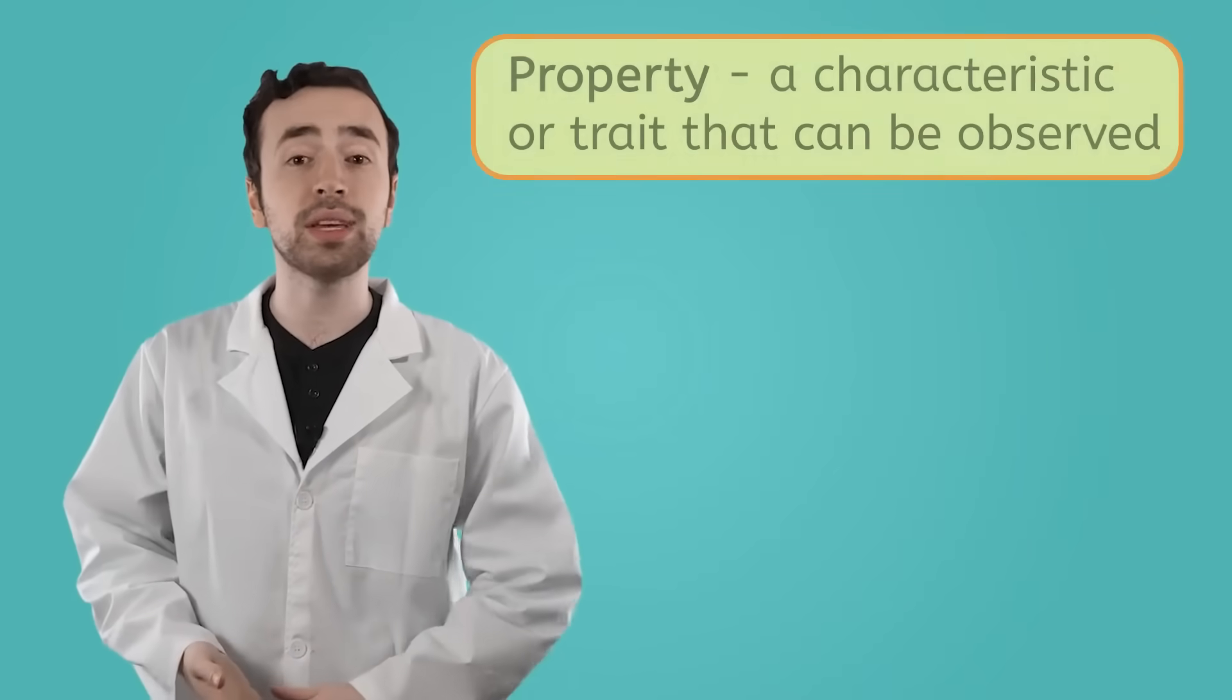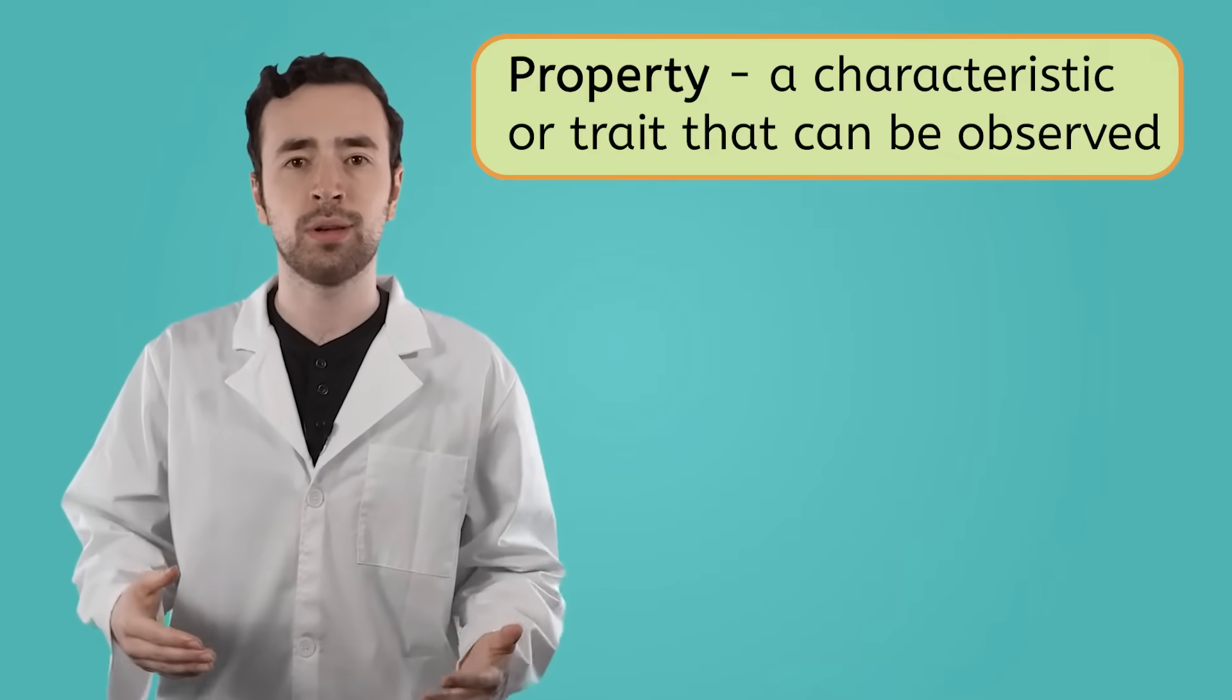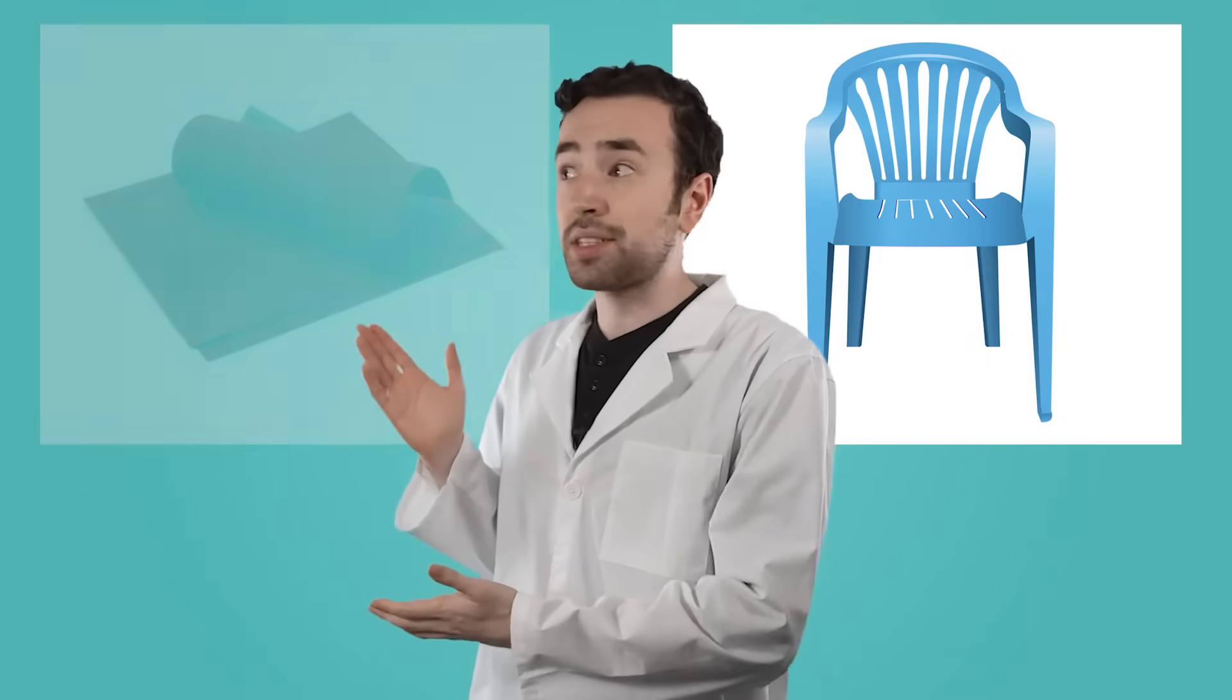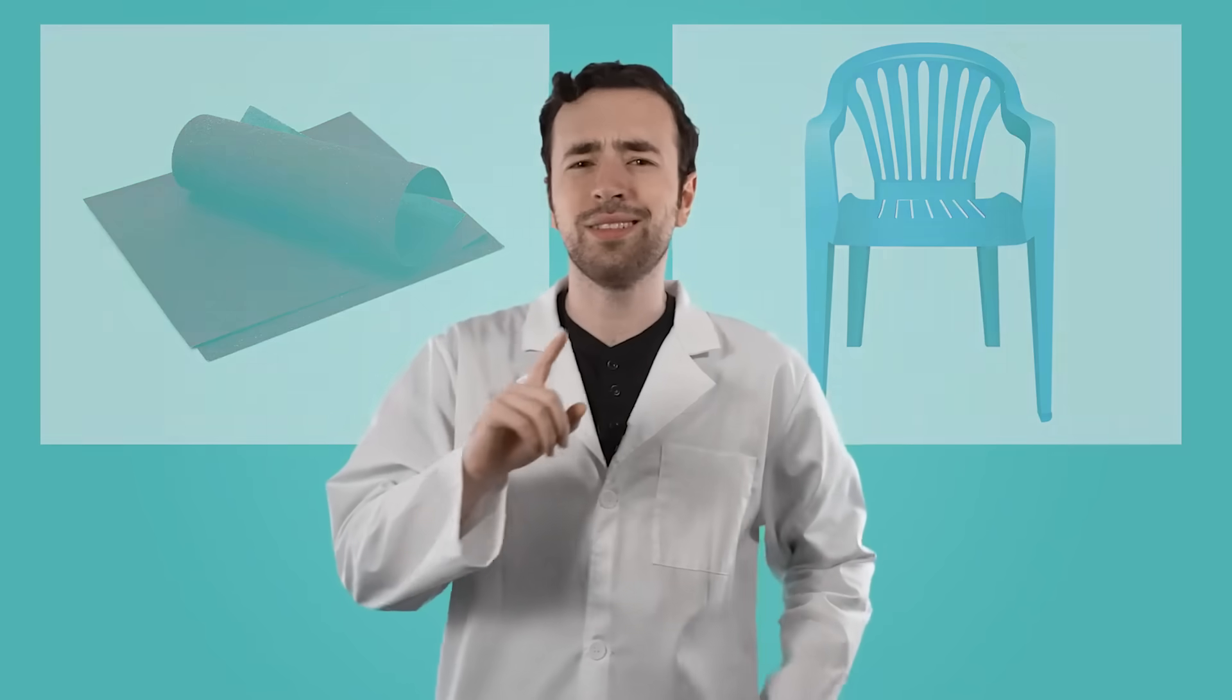A property is a characteristic or trait that can be observed. Some examples: This chair is blue. This sandpaper is rough and bumpy. Hey wait, you're matter, right? What kind of properties do you have?